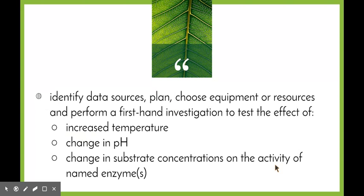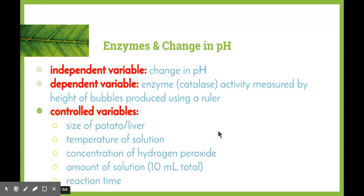Following up is a syllabus dot point: identify data sources, plan, choose equipment or resources, and perform a first-hand investigation to test the effect of increased temperature, change in pH, or change in substrate concentrations on the activity of named enzymes. These are three different first-hand investigations looking at the different ranges that enzymes need to function in. For the enzymes and change in pH experiment, the independent variable is the pH, and the dependent variable is enzyme activity. The enzyme we will use is catalase, measuring activity by the height of bubbles produced using a ruler. Control variables include the size of the substrate (potato or liver), temperature of the solutions, concentration of hydrogen peroxide, amount of solution, and reaction time.